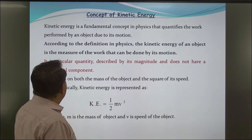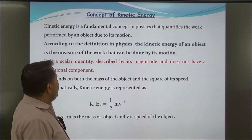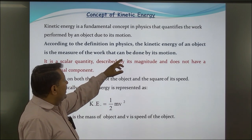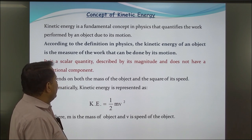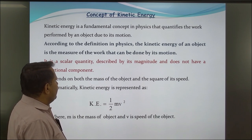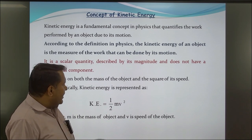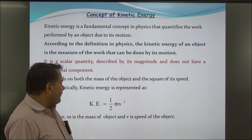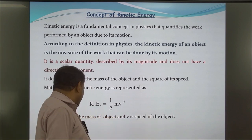Concept of Kinetic Energy: Kinetic energy is a fundamental concept in physics that quantifies the work performed by an object due to its motion. The kinetic energy of an object is the measure of the work that can be done by its motion. It is a scalar quantity described by its magnitude and does not have a directional component. It depends on the mass of the object and the square of speed. Mathematically, kinetic energy is represented as half mv², where m is the mass of an object and v is the speed of an object.